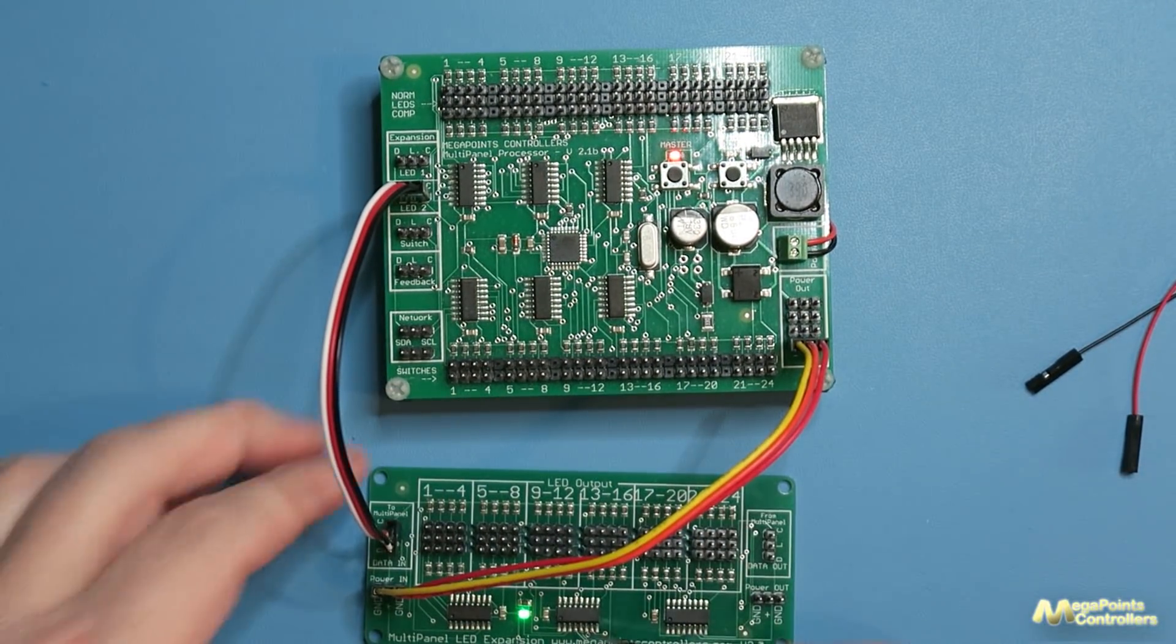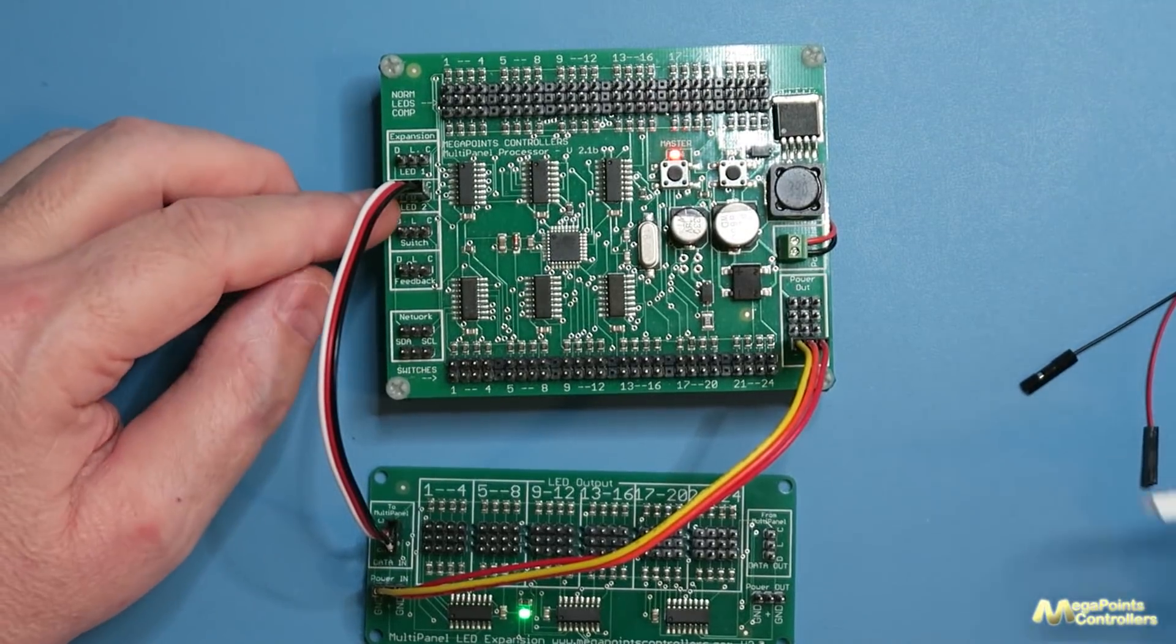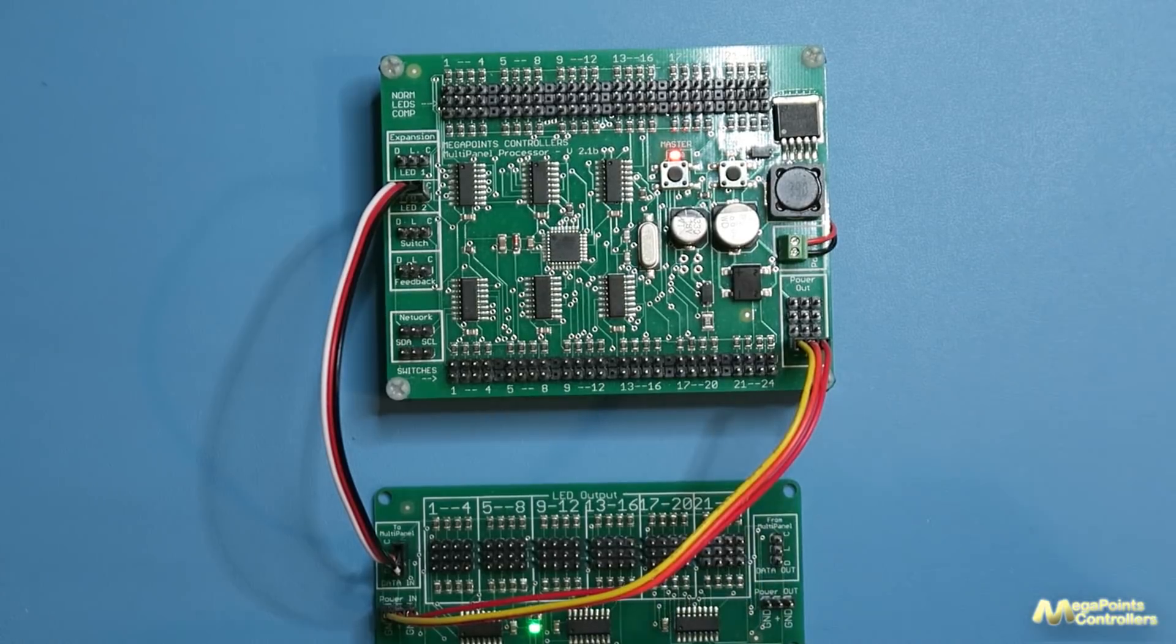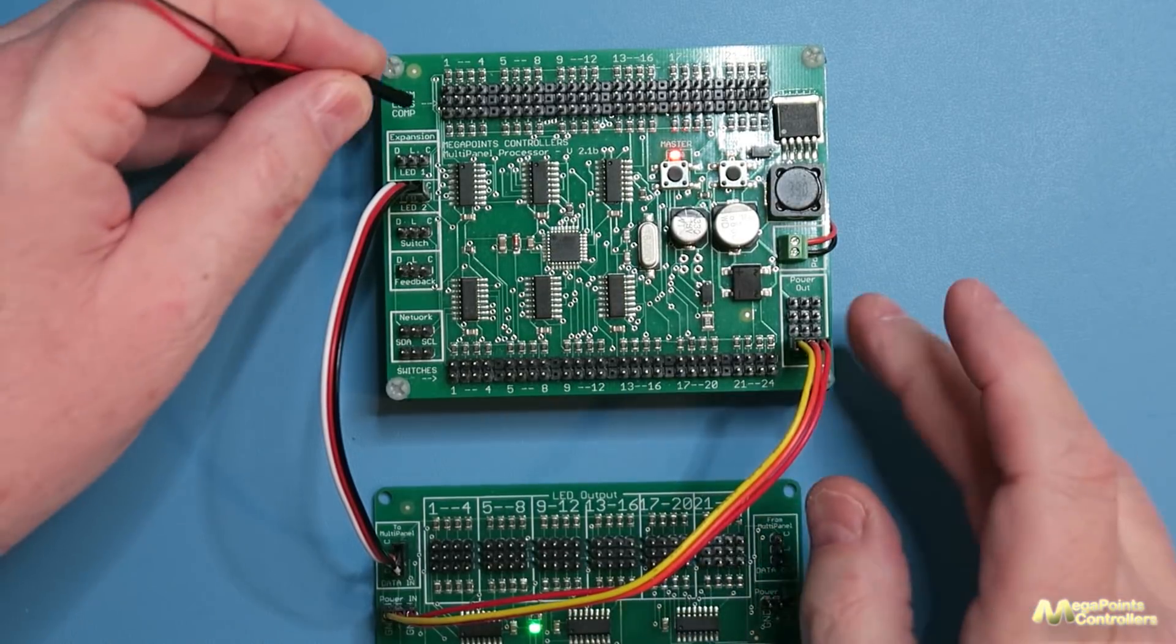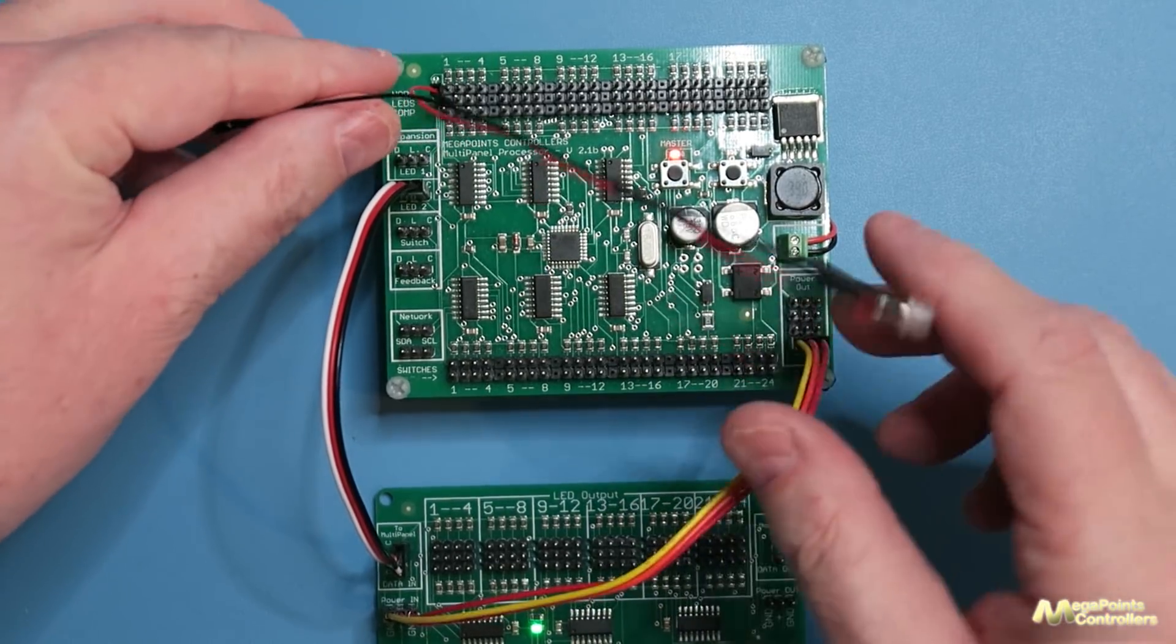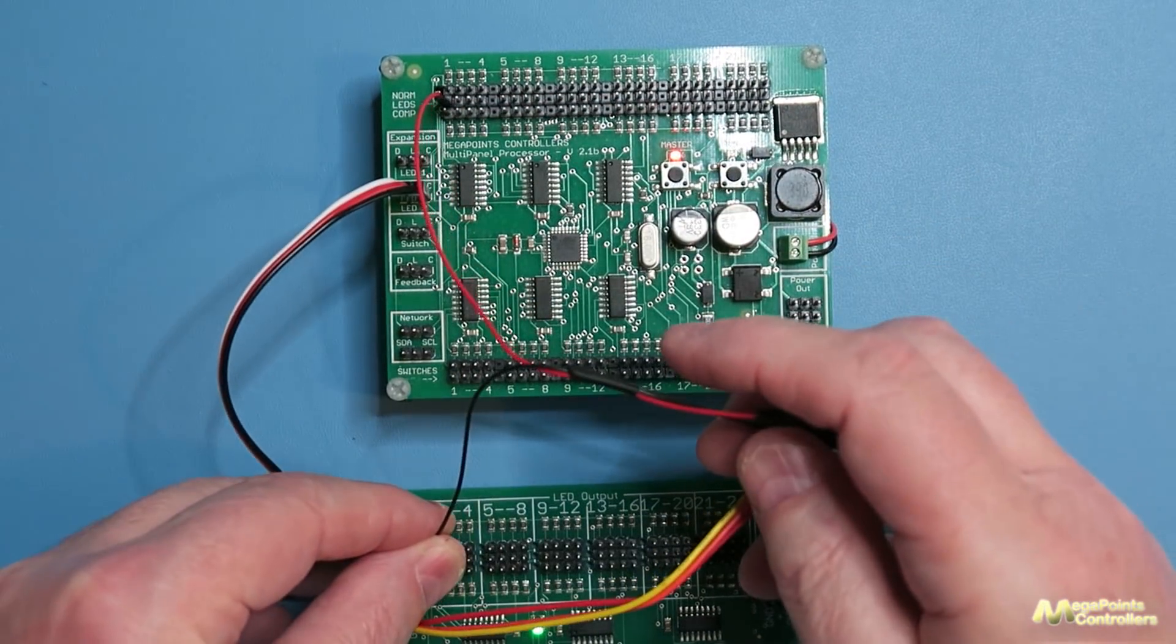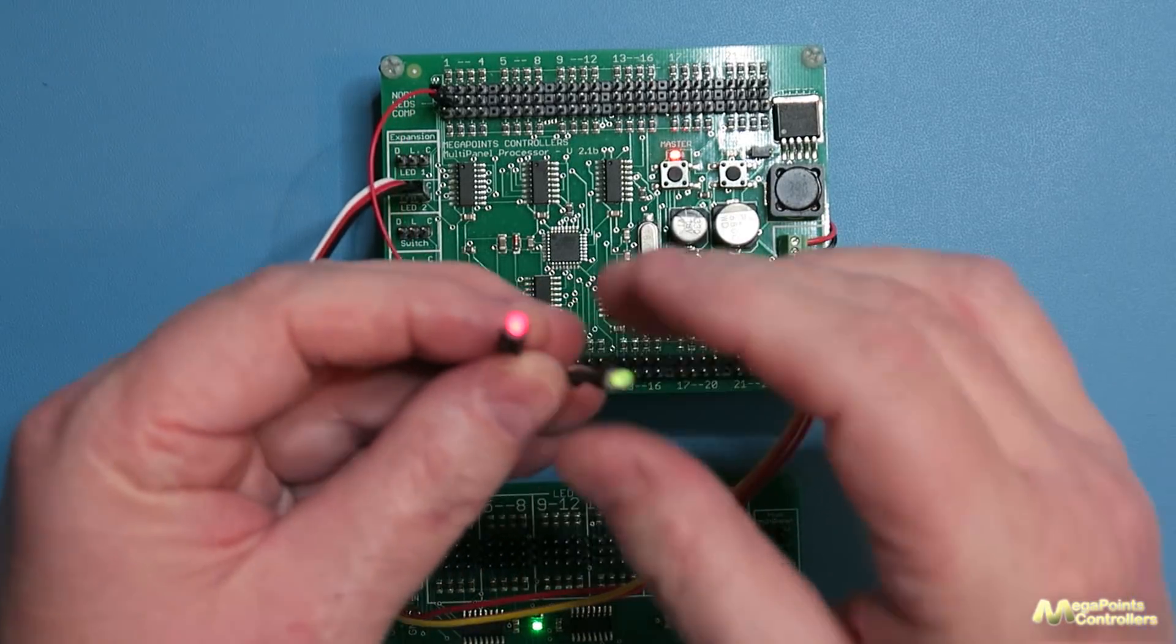So I have the LED expansion board connected to the LED 2 connector this is my power connector here to power it and what I'm going to do is plug one of these into the center pin on channel 1 and the other one into the center pin on the expansion board of channel 1.